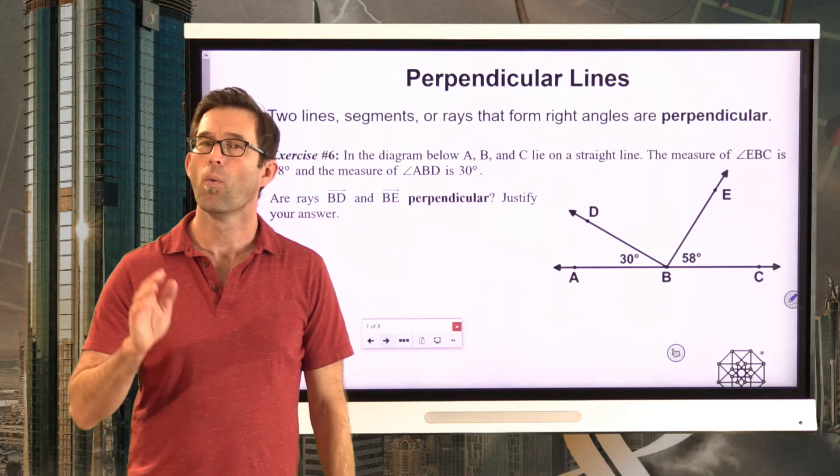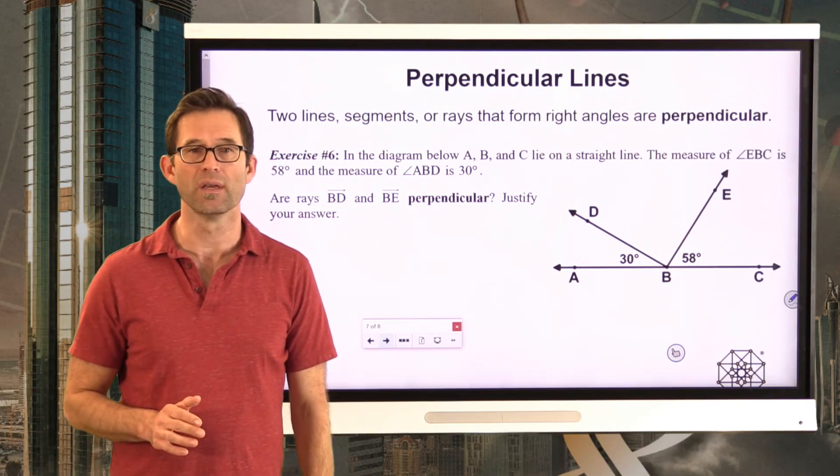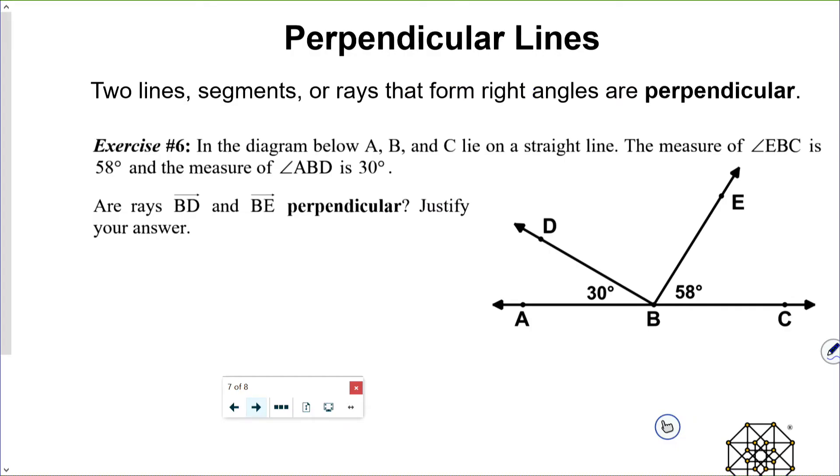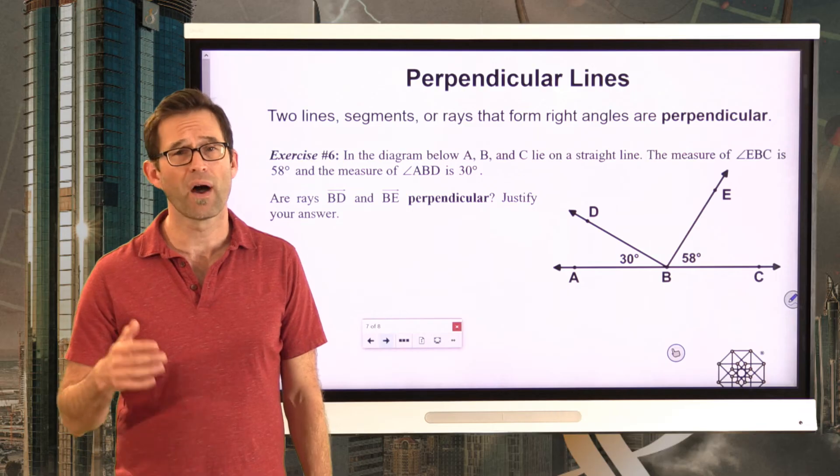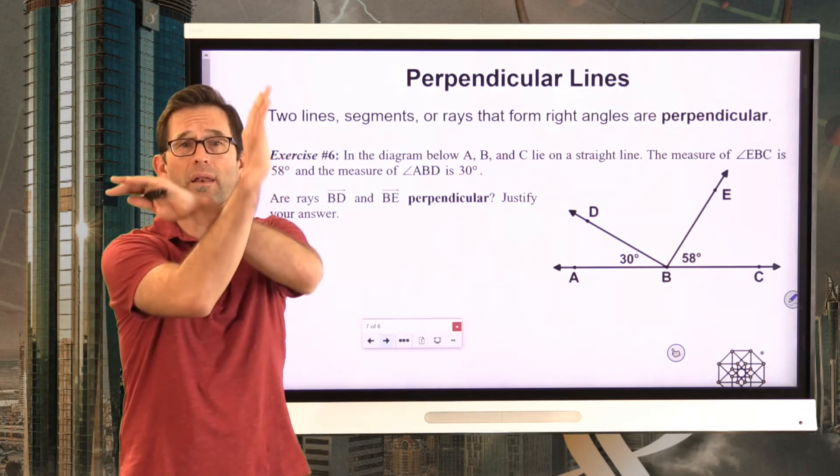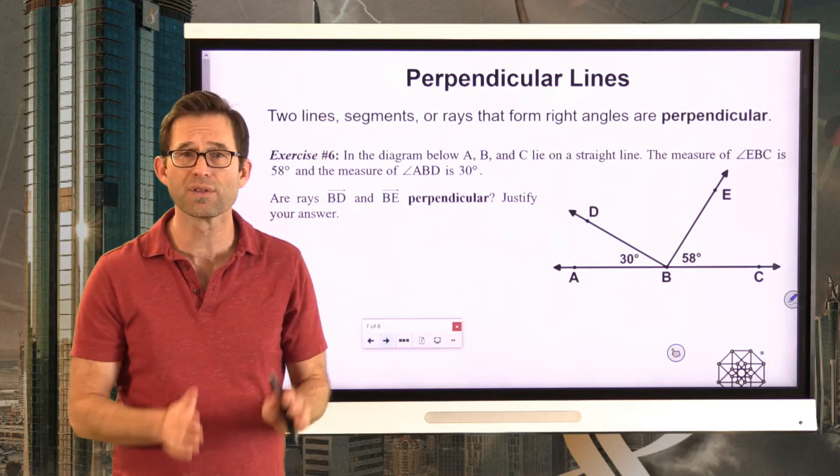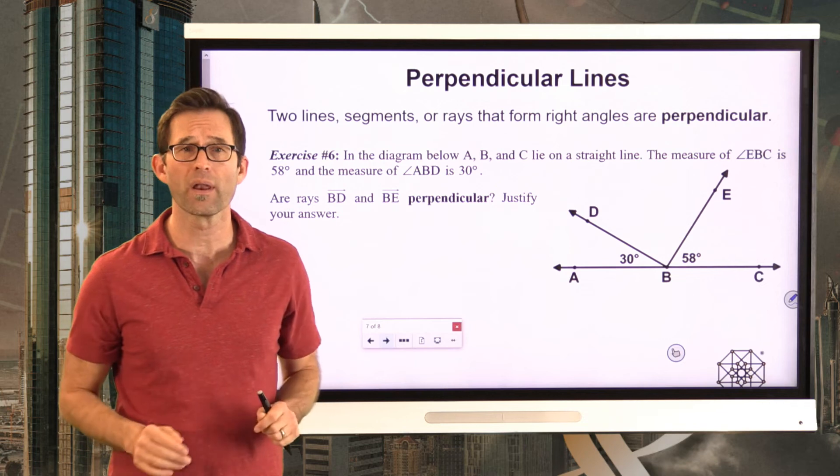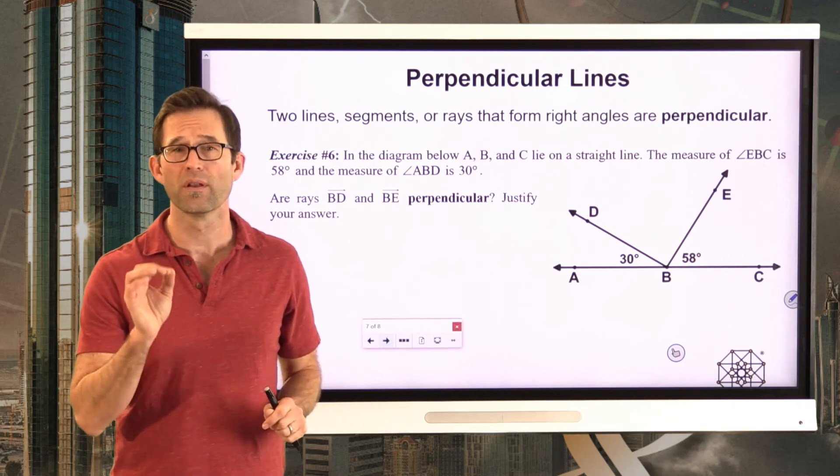Alright, let's do a little more terminology in this last piece. Perpendicular. What an important piece of terminology in math. Perpendicular lines are any two lines, segments, or rays that form right angles. Okay? So if I've got a line and another line that cross and form right angles, two rays that form right angles, two segments that form right angles, they're called perpendicular to one another.